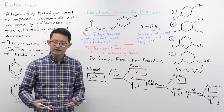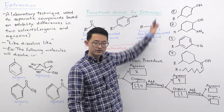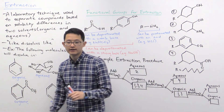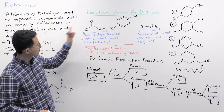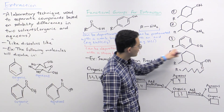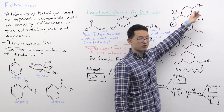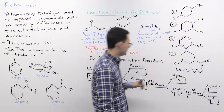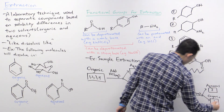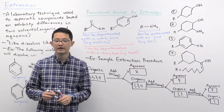We pour away the aqueous layer, leaving the organic layer with molecules 1 and 3. We then add aqueous sodium hydroxide. Sodium hydroxide can deprotonate carboxylic acids and phenols. Molecule three has a phenol, but molecule one does not — it has a hydroxyl group but not the benzene ring. So molecule three gets deprotonated, obtains a full negative charge, and moves into the aqueous layer, leaving molecule one in the organic layer.